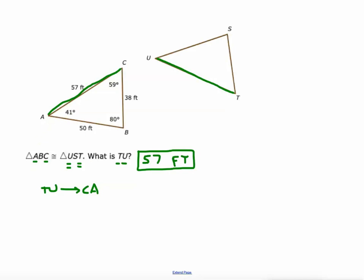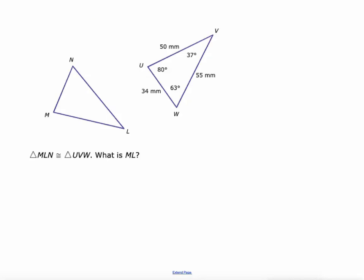I'll show you one more time how that works. ML, all right, so ML is the first two digits, or the first two vertices in this first triangle. So UV is what it corresponds to. ML corresponds to UV. UV has a measure of 50, so ML is going to have a measure of 50, as in 50 millimeters.